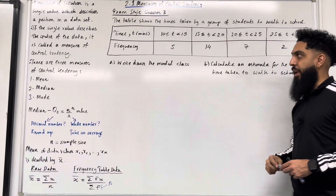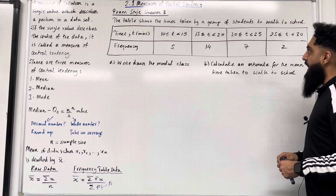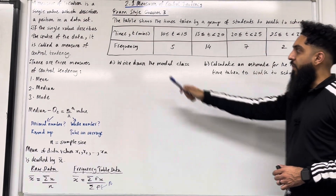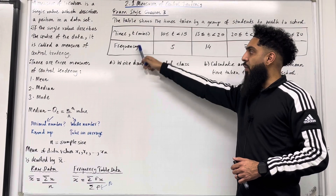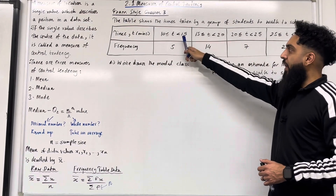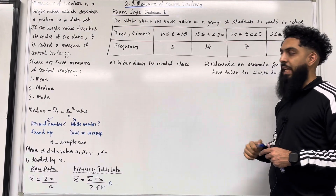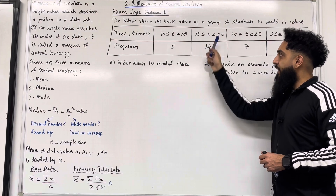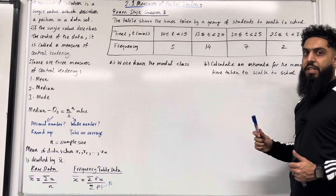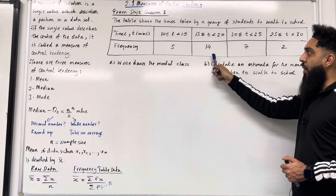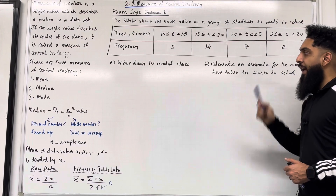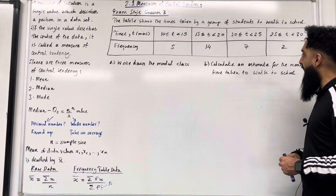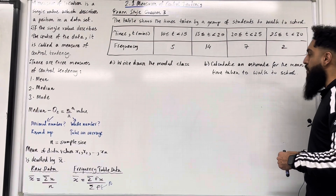Here is exam style question 3. The table shows the times taken by a group of students to walk to school. We have time T measured in minutes and frequency. The class interval 10 ≤ T < 15 has frequency 5, and 15 ≤ T < 20 has frequency 14, and so on. In part A, write down the modal class, and in part B, calculate an estimate for the mean time taken to walk to school.